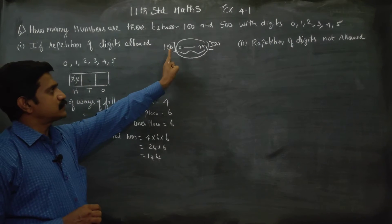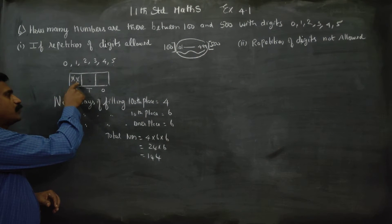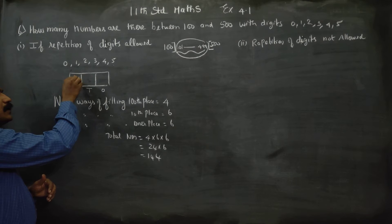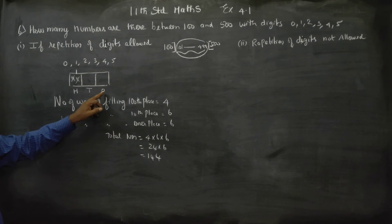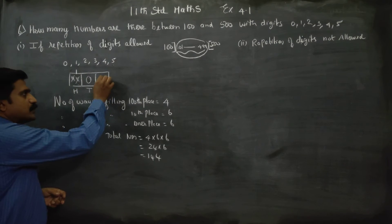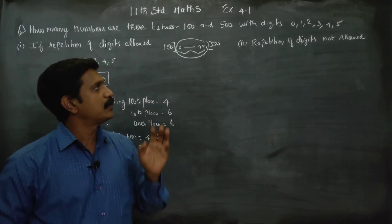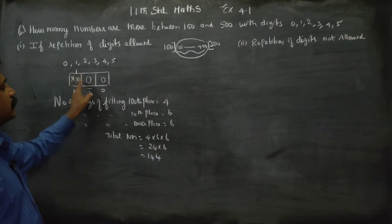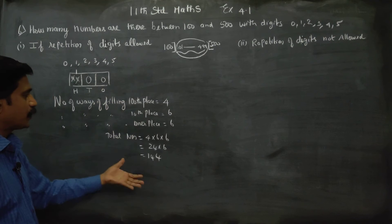Why? The answer should be between 100 and 500. For example, when 100th place is 1, 10th place is 0, and 1's place is 0 — and since repetition is allowed — we get 100. But 100 is not included in the range 'between 100 and 500.' That's why, in this method, one number is 100, which must be subtracted.